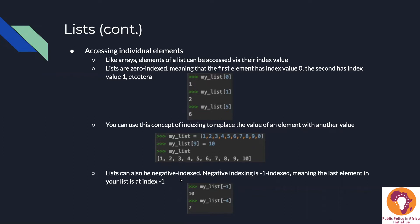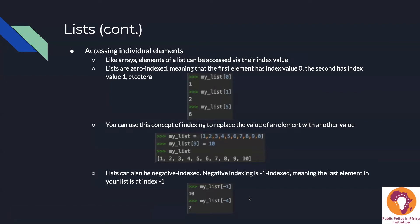A list can also be negatively indexed, and it's negative-one indexed. The last element in your list is at index negative one. So for our list of 1 through 10, getting index negative one returns 10 — the last element. Getting index negative four returns 7. This is extremely useful because often you don't know exactly how long your list is, but you care about something at the very end. So keep in mind that you can leverage negative indexing in Python lists.